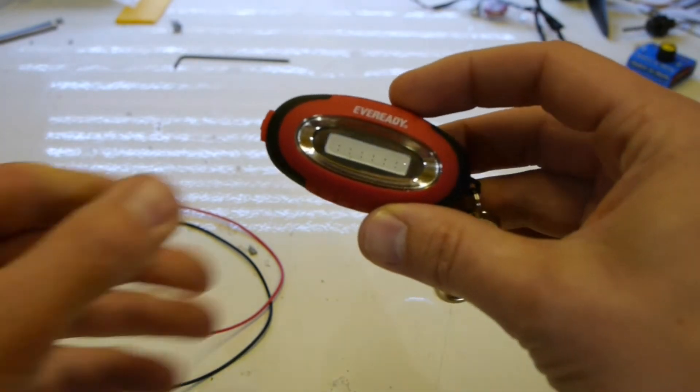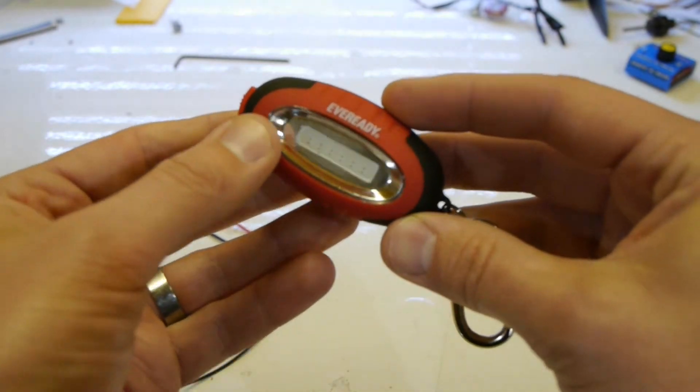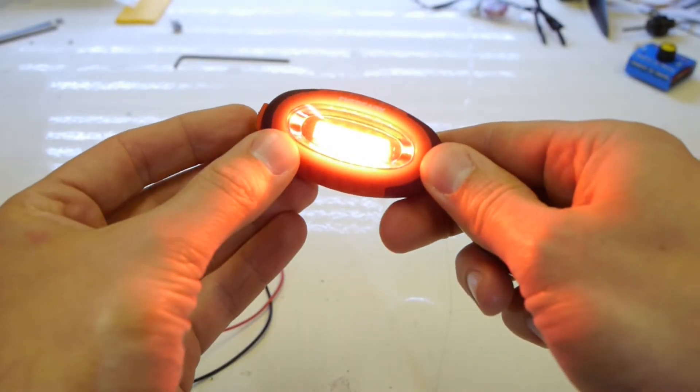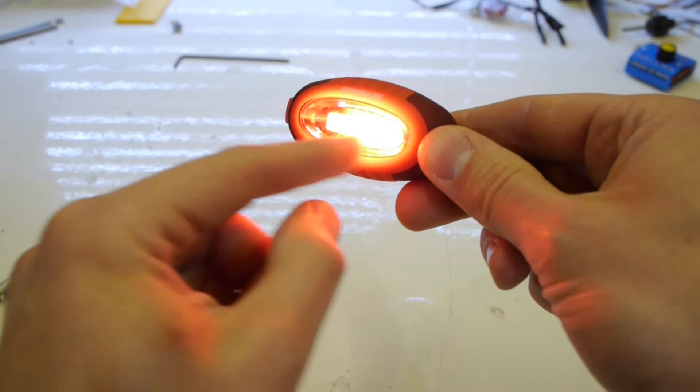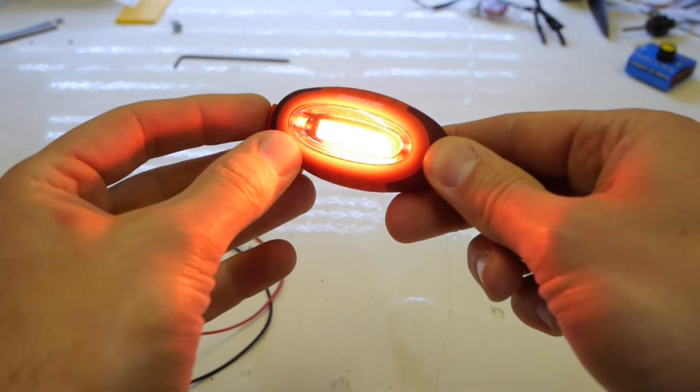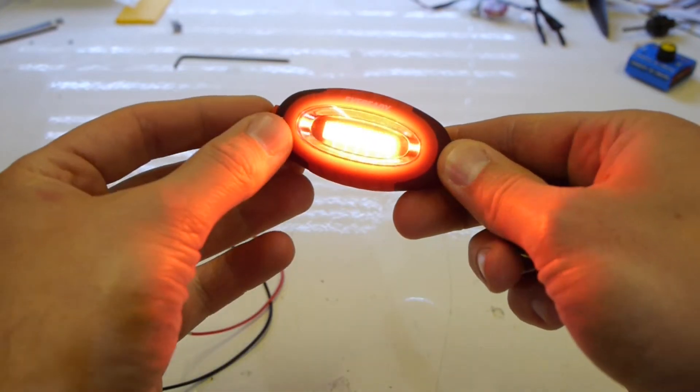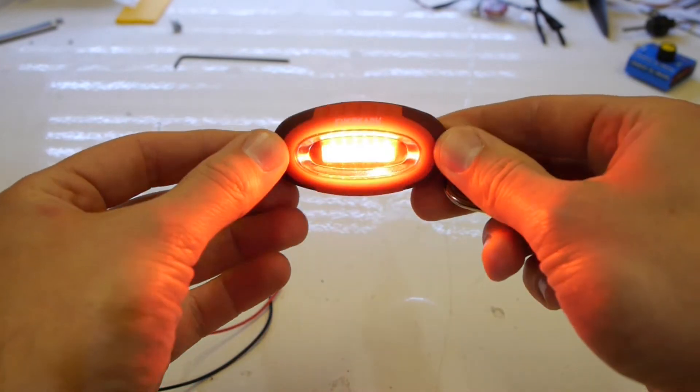What the COB LEDs or chip on board LEDs do is they have multiple chips bonded onto the one substrate but effectively what you get is something that looks like a single source of light even though there's multiple LED chips on the device itself.